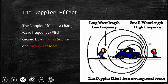The Doppler effect is a change in wave frequency caused by a moving source or a moving observer. Basically, the Doppler effect is related to moving things — whether the observer moves or the source moves.